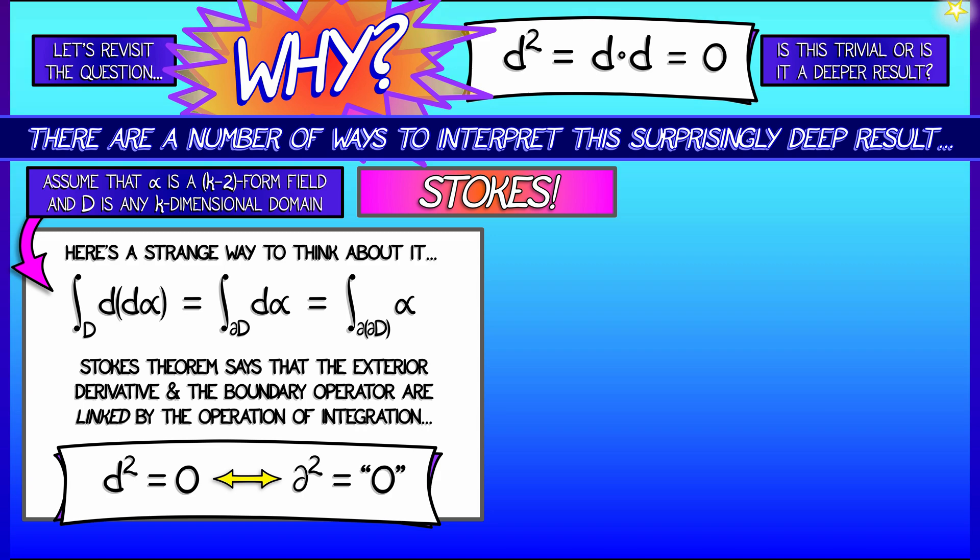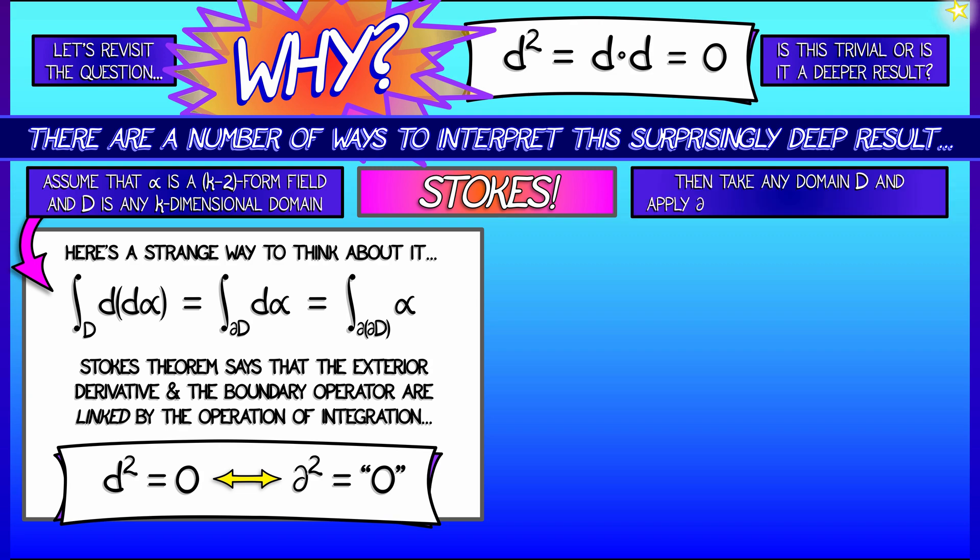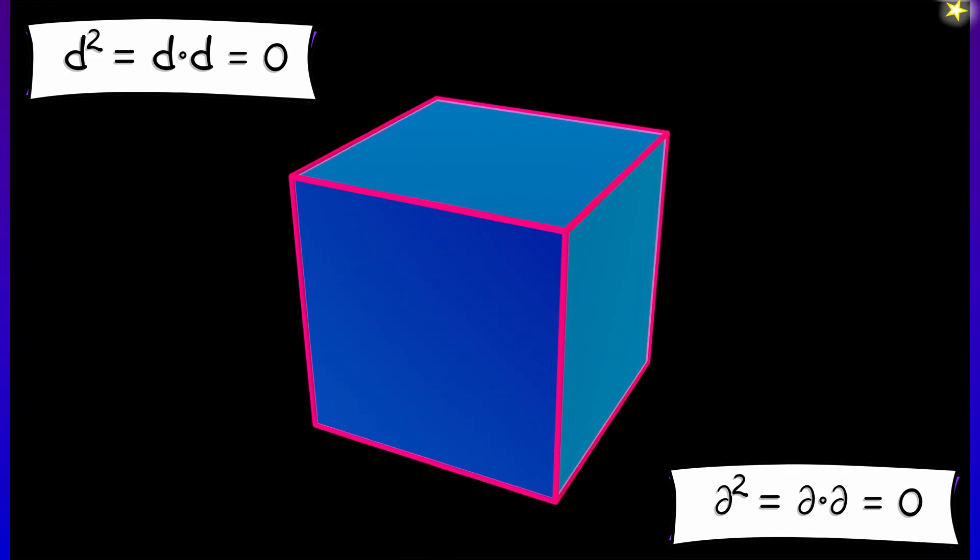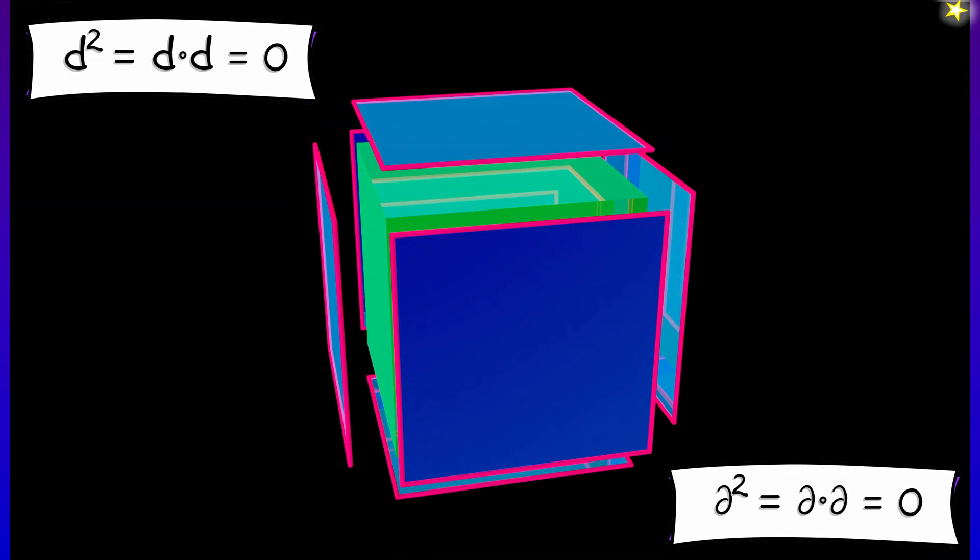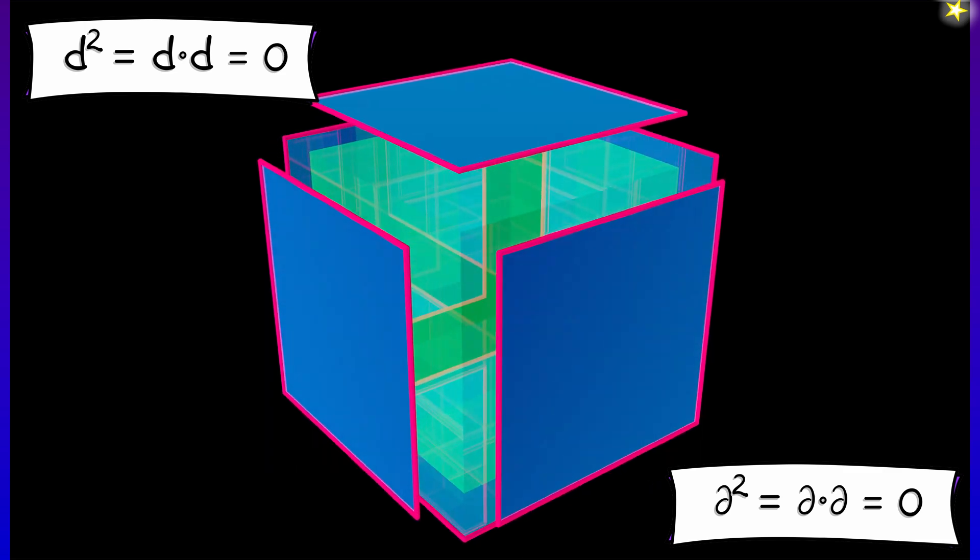Is that the case? Well, let's take a domain d and apply the boundary operator twice. Maybe you've got a cube in 3d, and you look at its boundary, and then you've got those six faces, right?